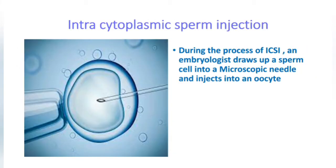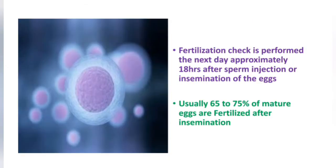In ICSI — intracytoplasmic sperm injection — an embryologist draws up a sperm cell into a microscopic needle and injects it directly into an oocyte. A fertilization check is performed the next day, approximately 18 hours after sperm injection or insemination of the eggs. Usually 65 to 75 percent of mature eggs are fertilized after insemination.